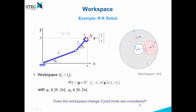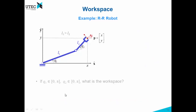Now, what happens if the joint limits are considered — does the workspace change? Joint limits are values that restrict the motion of the joints. For example, a joint limit can say that Q1 cannot go from zero to two pi but only from zero to pi. So let's say that Q1 is going to go just from zero to pi and Q2 also from zero to pi.